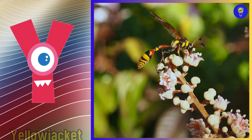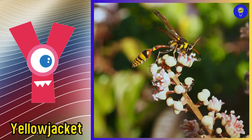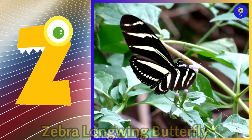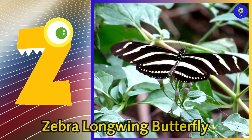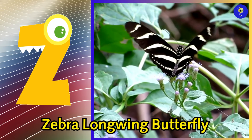Y is for yellow jacket. Y, y, yellow jacket. Z is for zebra longwing butterfly. Z, z, zebra longwing butterfly.